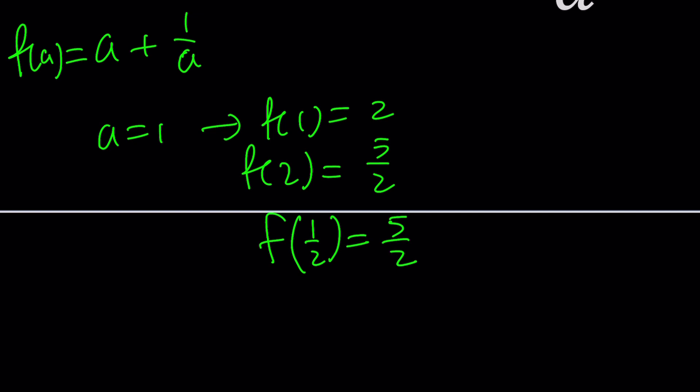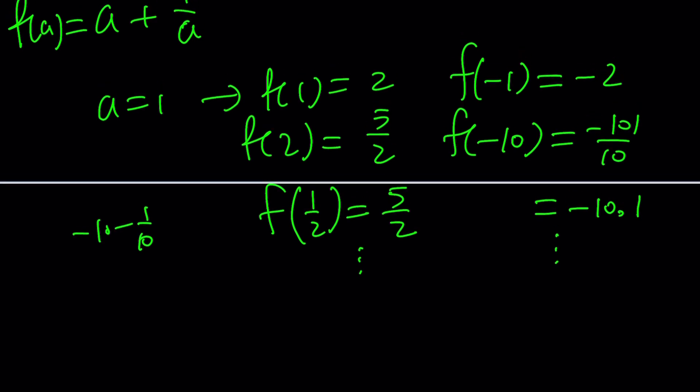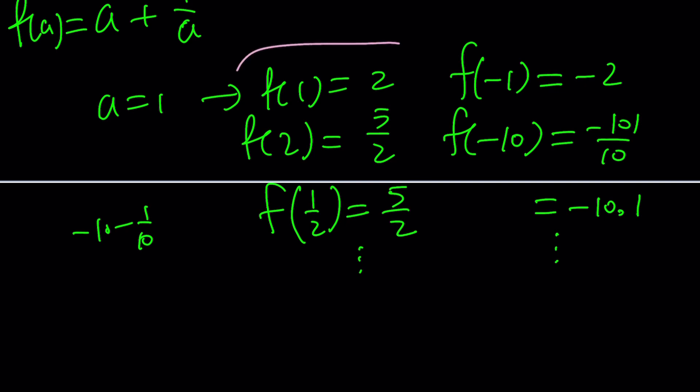It's the same as f of 2. Nice, because A and 1 over A are reciprocals. So there is a symmetry, but also notice that we can replace A with negative 1, that gives us negative 2. If you use something like negative 10, that will be about negative 10.1. Have you noticed something about all these results? You're going to get always something that is greater than 1 or less than negative 1.